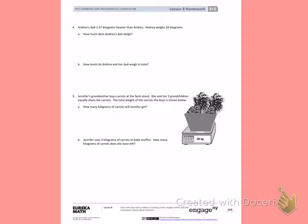Well, we know that Andrea weighs 34 kilograms. We know her dad weighs 57 kilograms more. We need to find how much her dad weighs. When we know the word more, we want to add these two numbers. Our picture also shows that because we don't have equal groups. So we're going to add Andrea's weight of 34 kilograms to her dad's weight of 57 kilograms.